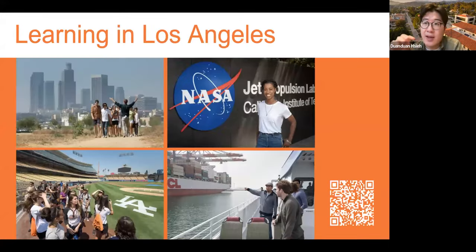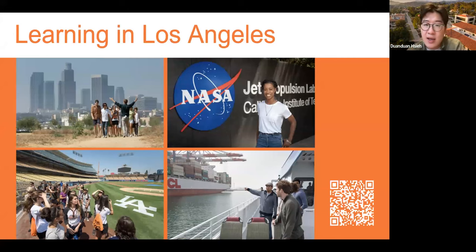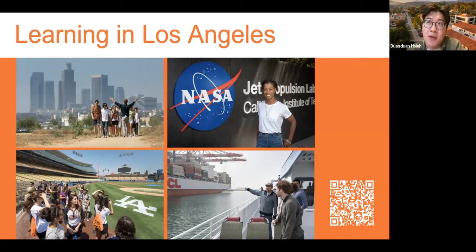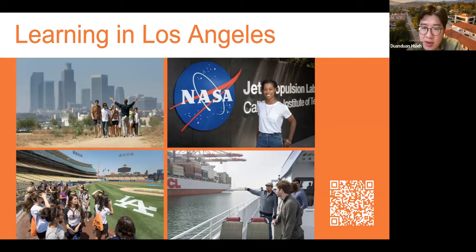I also wanted to mention that for students interested in engineering, we have a 3+2 engineering program where you do three years at Oxy and two years at Columbia. You'll graduate with a bachelor's in engineering and get an advanced start in your career. That's something students often consider when looking at Occidental.